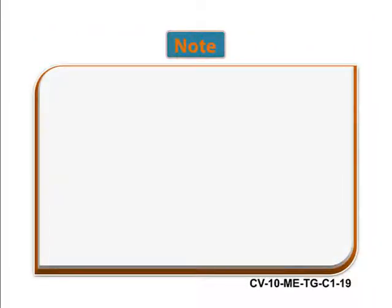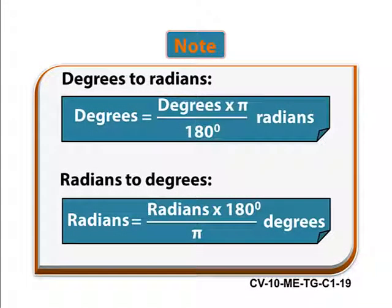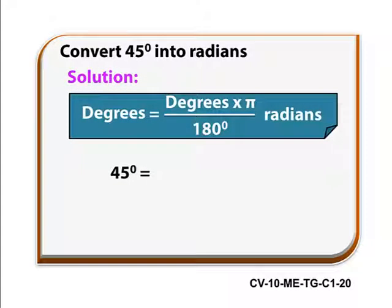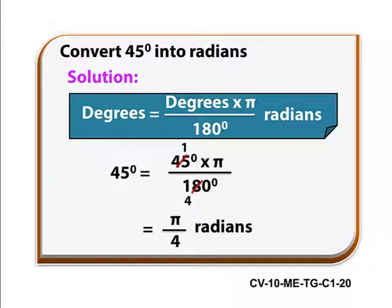The general formula for converting from radians to degrees. Here is an example. Convert 45 degrees into radians. 45 degrees is equal to 45 into pi by 180. That is pi by 4 radians.